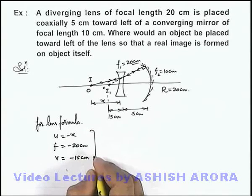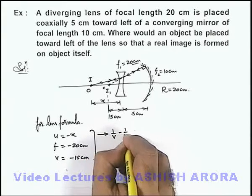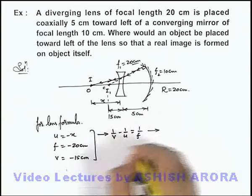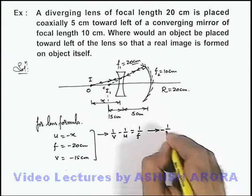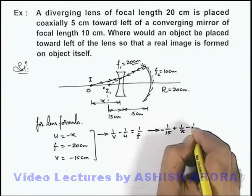If we use the results in the lens formula which is 1 by v minus 1 by u is 1 by f, on substituting the values we get it is 1 by minus 15 plus 1 by x equals minus 1 by 20.